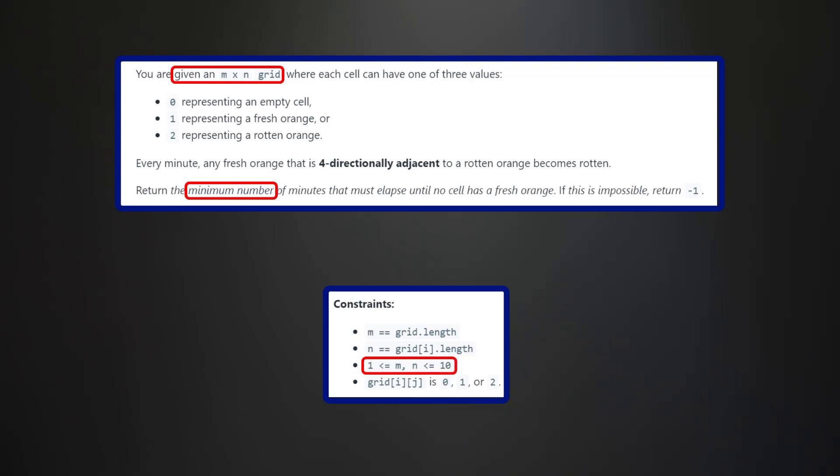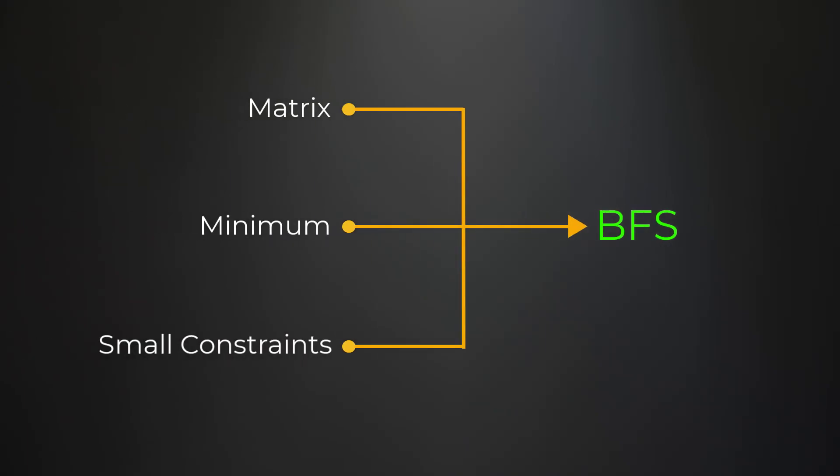Another neat trick is we can look at our constraints. Here we see that m and n will always be between 1 and 10, meaning at maximum we will have 10 rows and 10 columns — only 100 elements. This isn't a massive matrix by any means. A BFS is going to ensure that the minimum path will always be found first. So if you have matrix plus finding a minimum value plus very small constraints, chances are you need to use a breadth-first search.